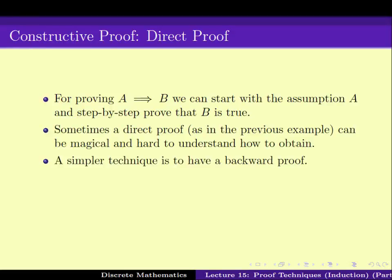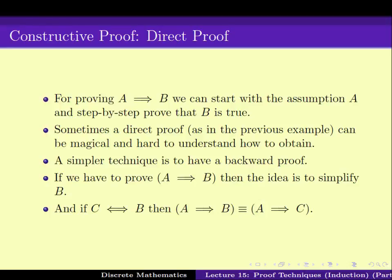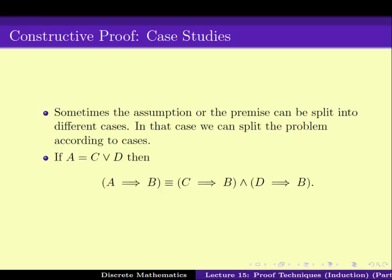Or one can go backward, meaning you can start simplifying B and slowly get to a situation where A implies C is easier to prove, but C is equivalent to B. We also looked at the case study proof. In this case, if we split the assumptions into some constant number of cases, and if we write A as C or D, then A implies B gets split up as C implies B and D implies B.